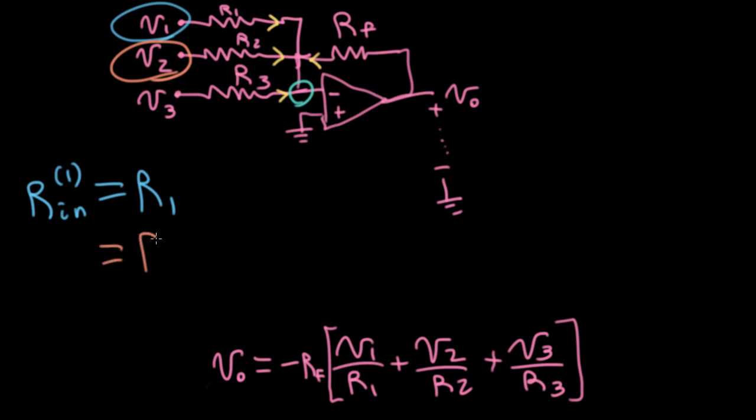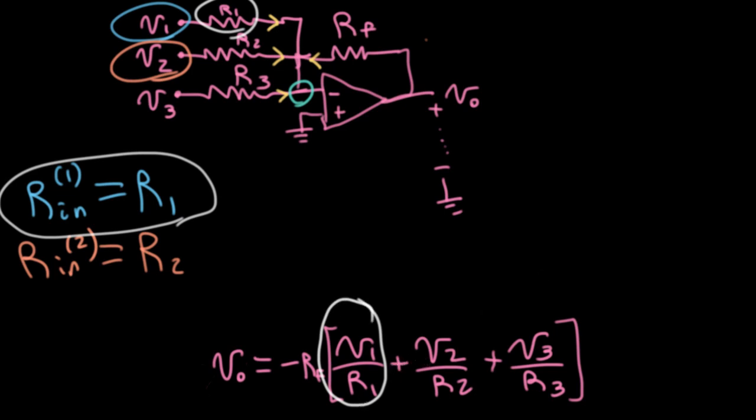Similarly, V2 is just going to see a resistance R2. That's the input resistance it sees, and so on for V3, V4, however many more you want to add in here. This is beautiful because as long as this op amp is doing its job of holding that negative input terminal at a virtual ground, it's decoupled the inputs. So if I change R1, I'm changing the input impedance that whatever is feeding this V1 input sees, and I'm changing the coefficient for V1, but I'm not doing anything to what's happening with V2. V2 still sees an R2 input impedance, and V2 still has the same coefficient multiplying it.